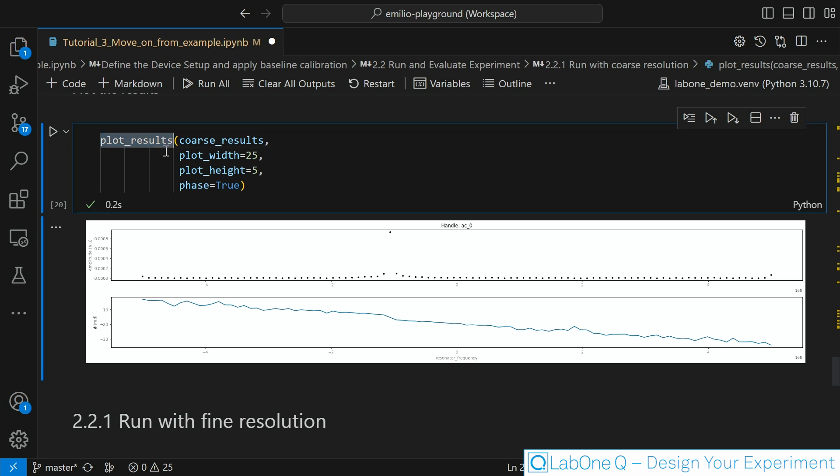Notice how I am using our function plot result provided by Lab1Q to automatically plot the result. In this case I also pass the phase equal true flag so I have also on the below plot the phase plot that already unwrapped. We do see that the phase is changing a little bit in the proximity of the resonance but we are a bit too far away. So let's try to redefine another experiment that looks a bit more in detail what is happening in this resonance.